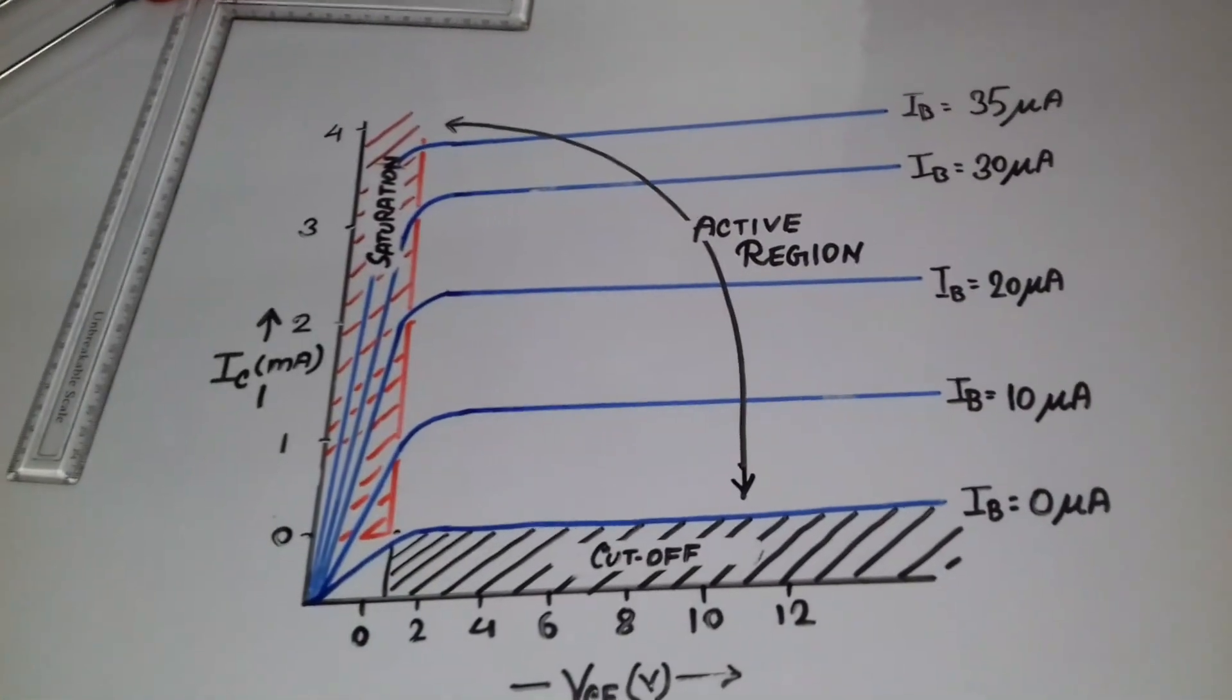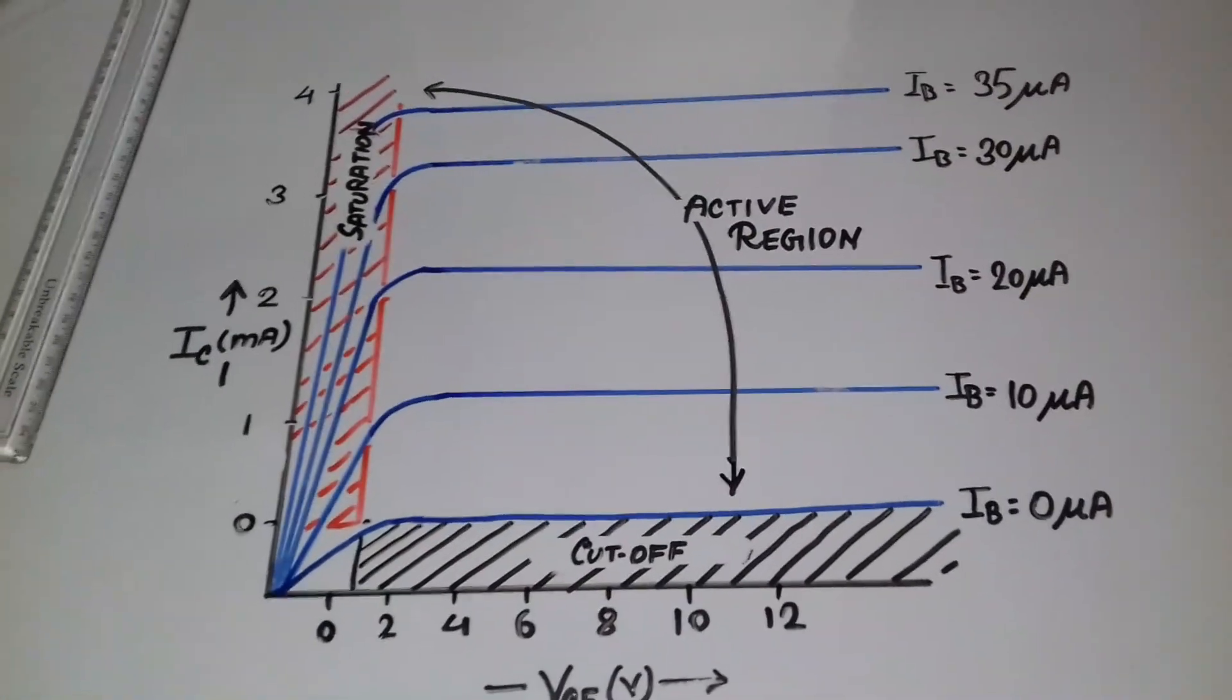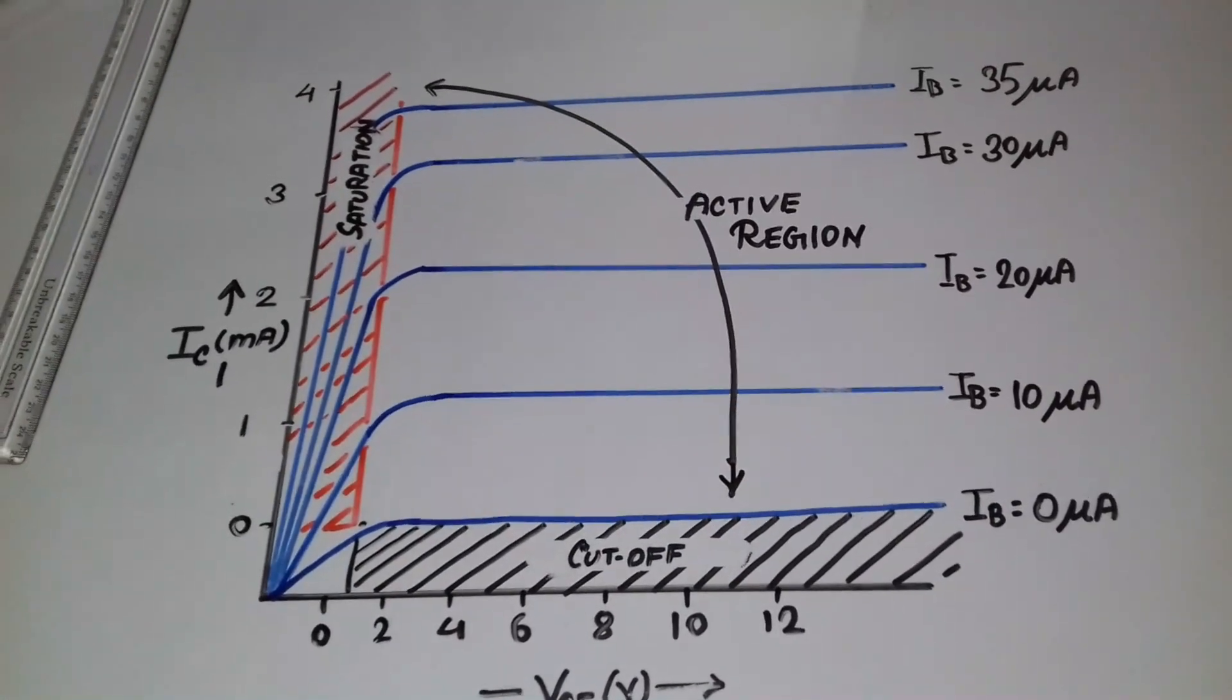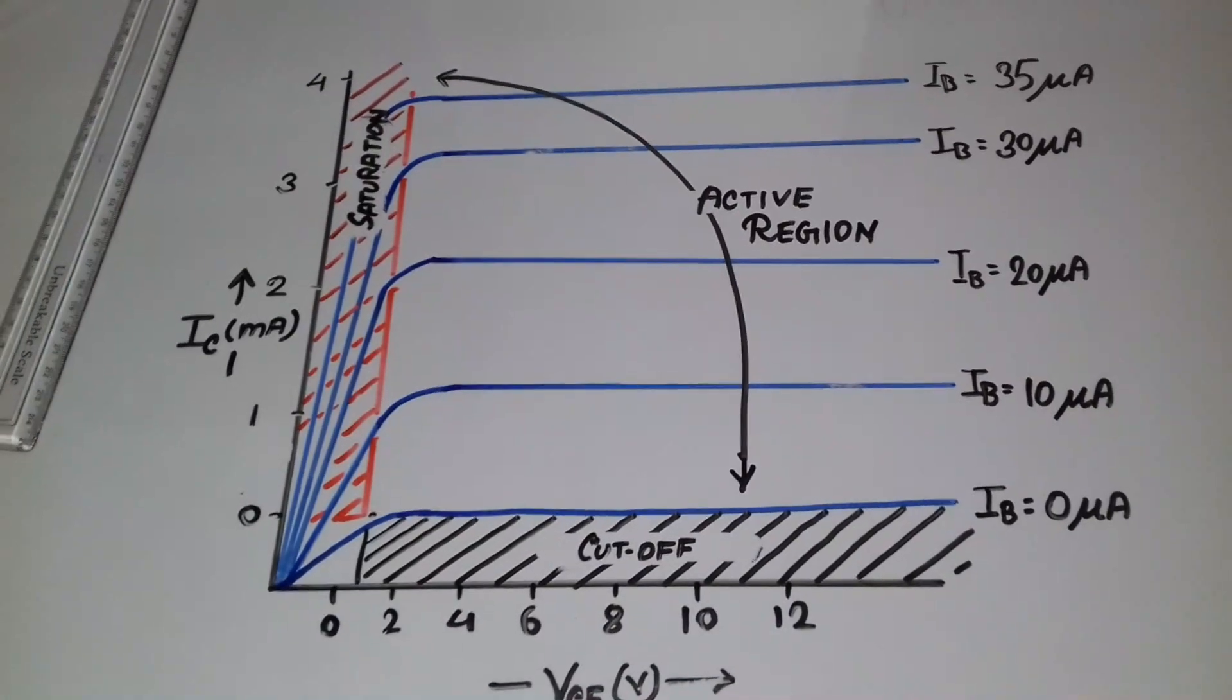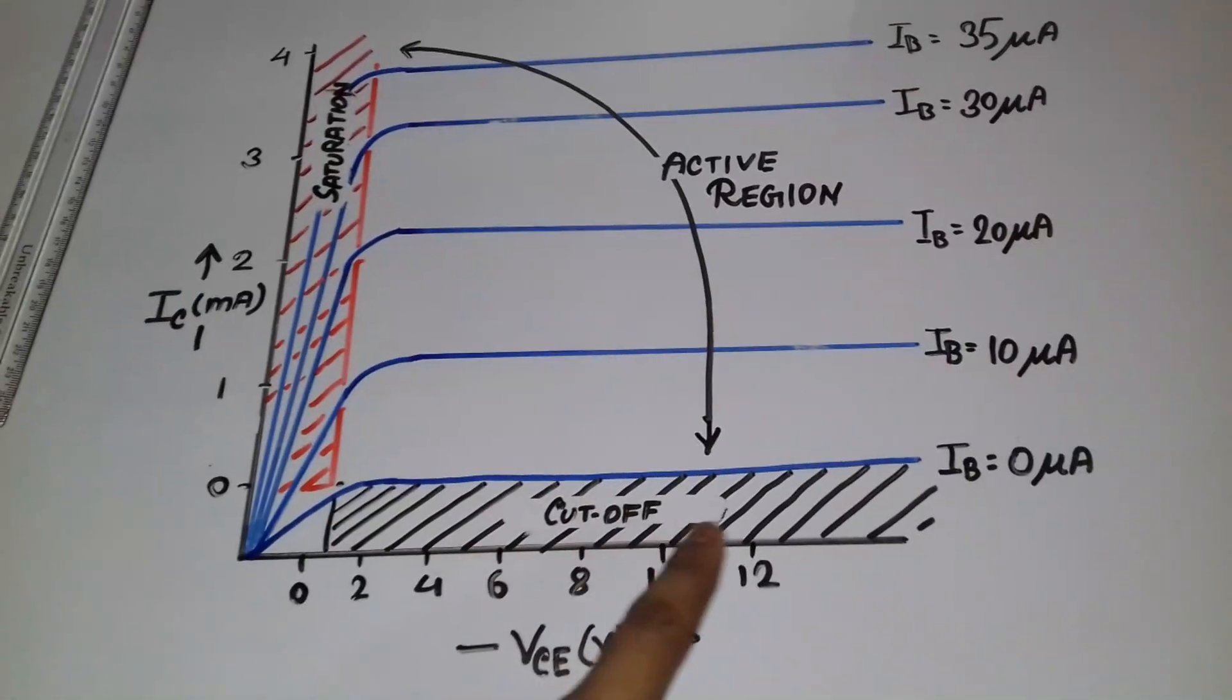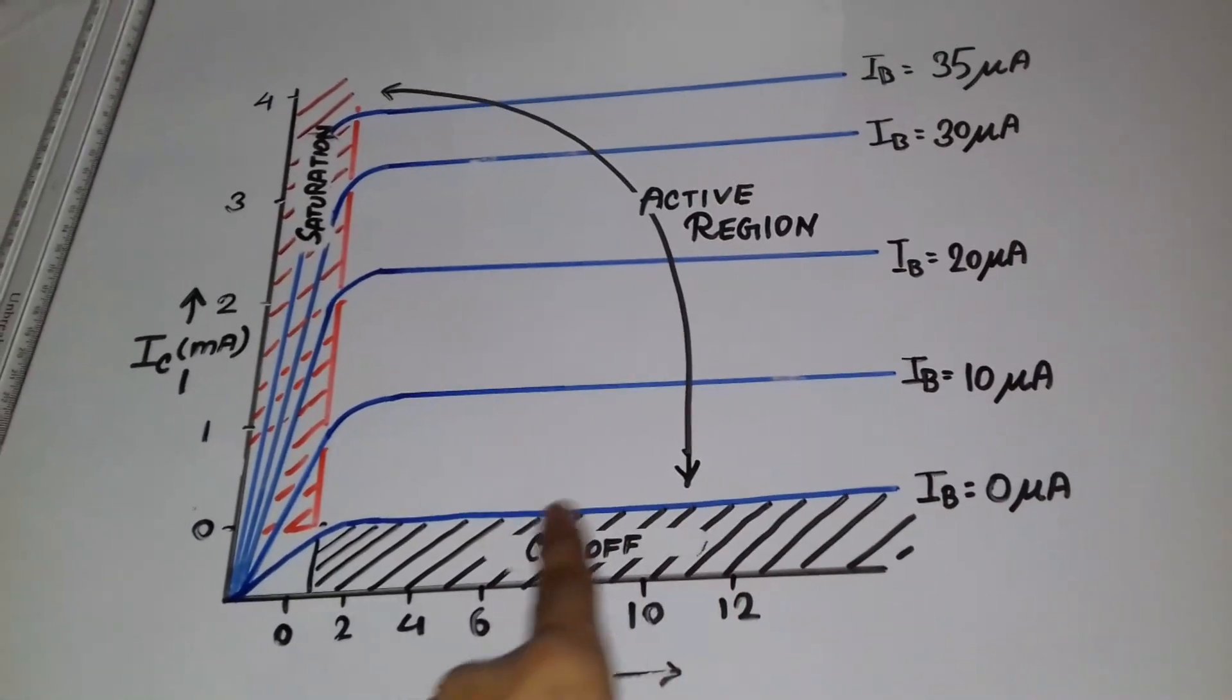And to take the transistor into the saturation region, we have to increase the base current. That is, we have to apply a large amount of base current, a large amount of positive base drive to make it on. And in the cutoff region, the base drive will be negative or zero. This is the cutoff region.